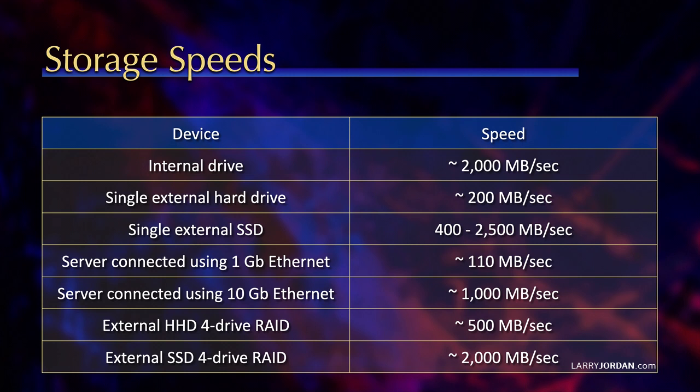So: cache files stored locally to decrease network traffic and to take advantage of the speed of your internal drive. Media stored externally on either a hard disk, an SSD, or a server, depending on how much storage capacity you need and what your budget is. Libraries store minimal amounts of data, but you still want them somewhere fast enough for Final Cut to access. All of these connected via Thunderbolt 2 or faster, and you should be good to go.